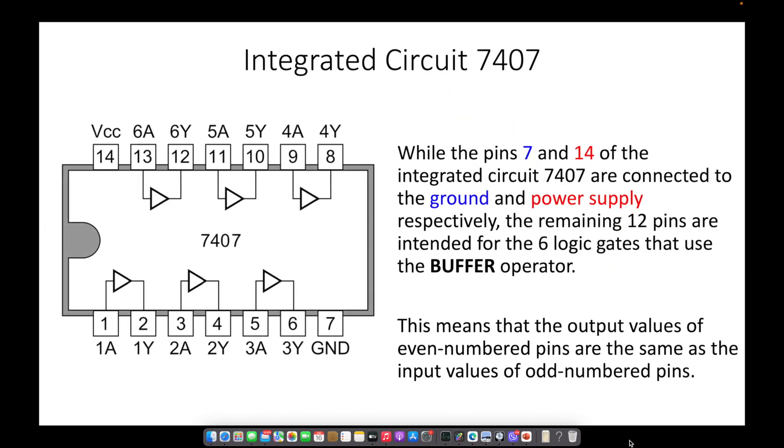While the pins 7 and 14 of the integrated circuit 7407 are connected to the ground and power supply respectively, the remaining 12 pins are intended for the 6 logic gates that use the buffer operator.